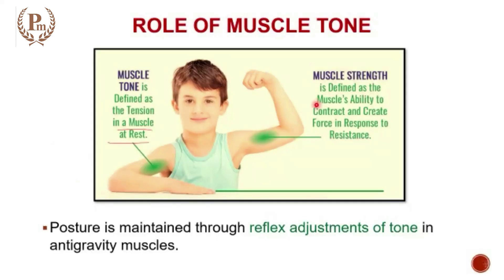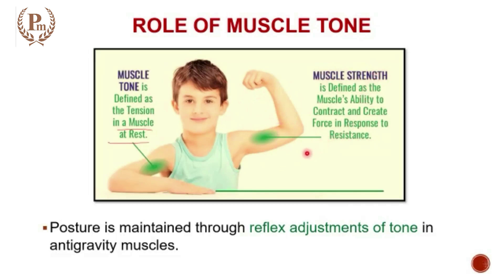What is muscle strength? It is defined as the muscle's ability to contract and create force in response to resistance. Suppose you are trying to flex the person and he is actively resisting that flexion. If you put your hand and ask him to try to extend, you can check the strength of the extensors; when he is trying to flex and you oppose that flexion, you will be checking the strength of the flexors. You check muscle strength by creating a force as resistance to the movement.